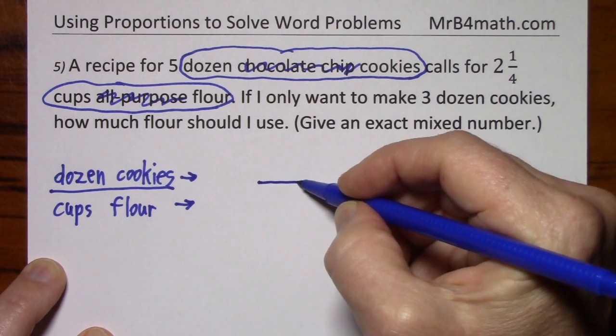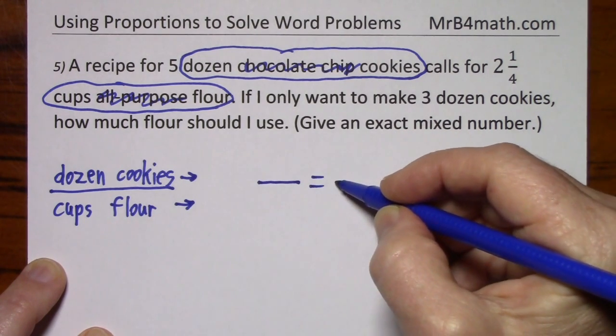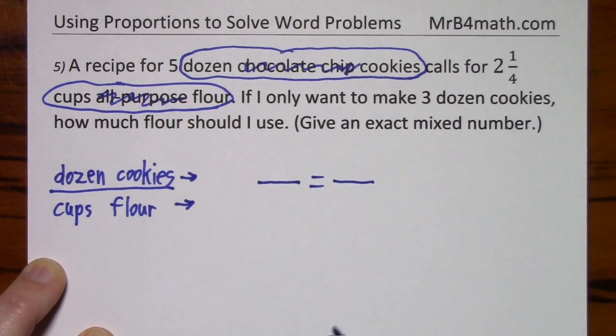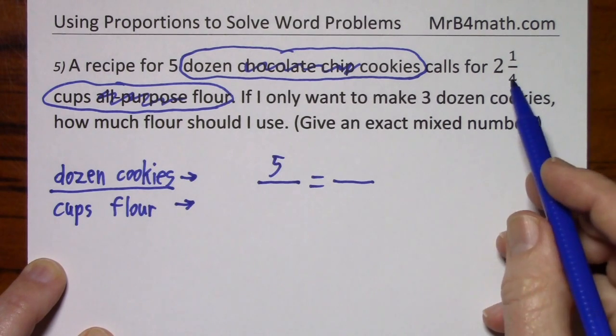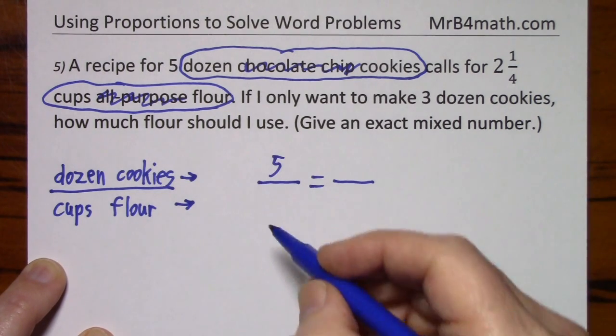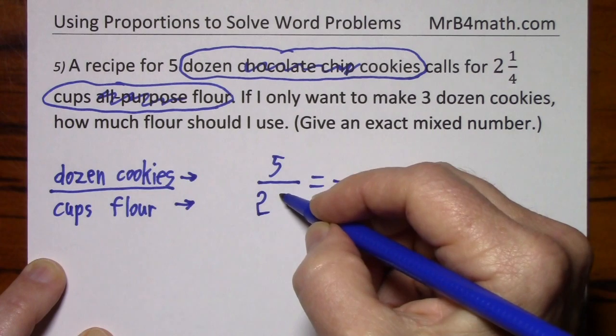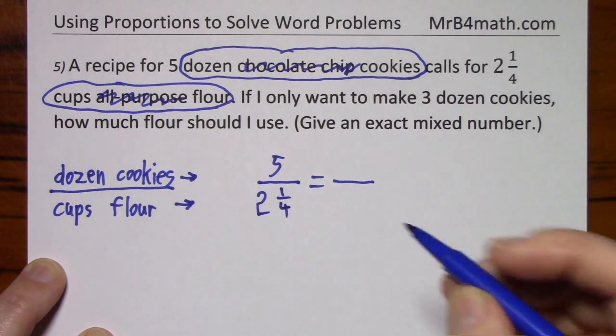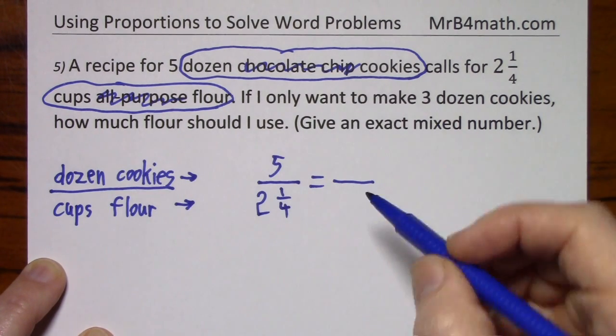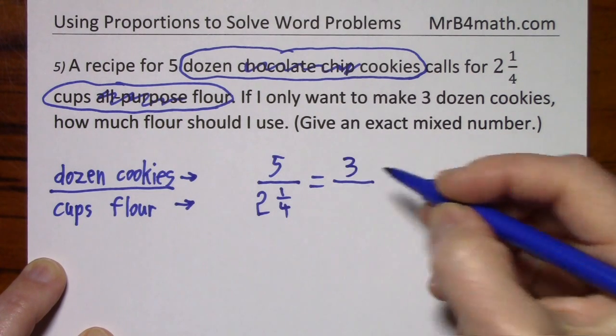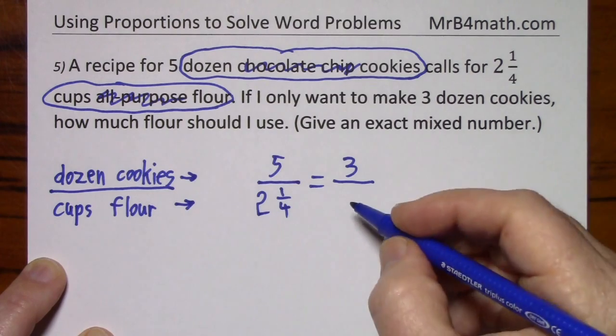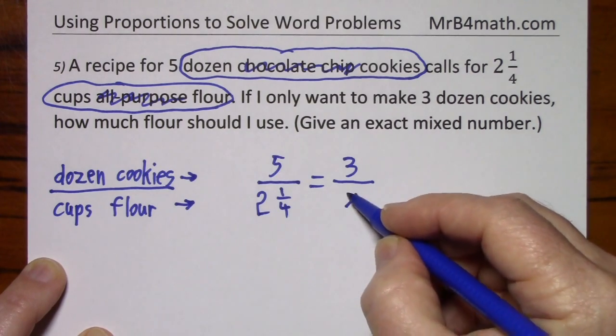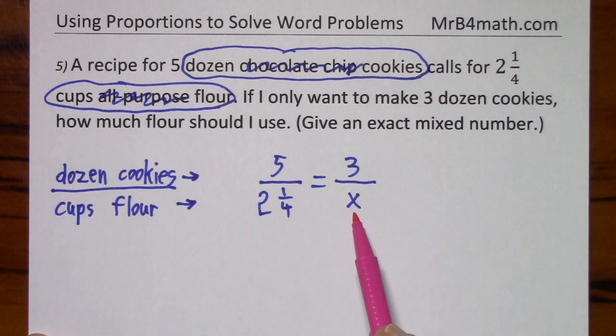Set up our proportion with a little room for scratch work, and then plug in the numbers. Five dozen, two and a quarter cups. I only want three dozen. How much flour, how many cups.